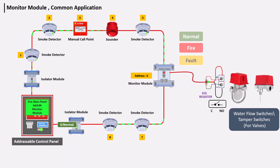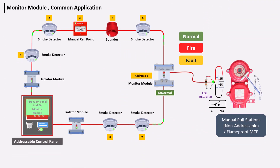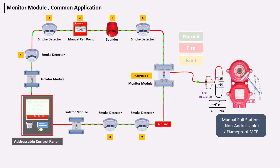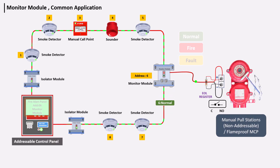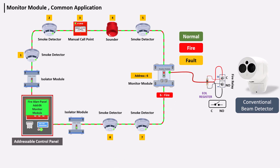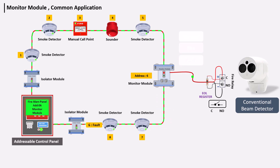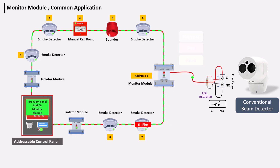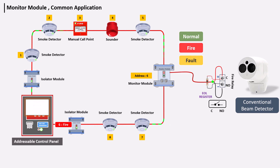Applications include water flow switches, tamper switches for valves, non-addressable manual push stations, and flame-proof MCPs. Sometimes when a non-addressable manual push station or flame-proof MCP is installed in a hazardous area which is mostly non-addressable, a monitor module is used. For conventional beam detectors — since loop-powered beam detectors are found in very few companies and their cost is higher — when you need to connect a conventional beam detector to an addressable fire alarm panel, a monitor module is used.